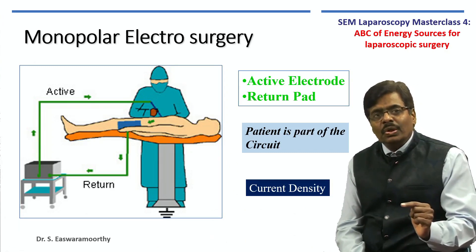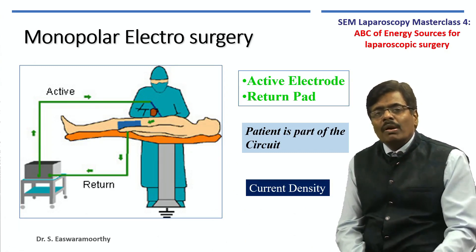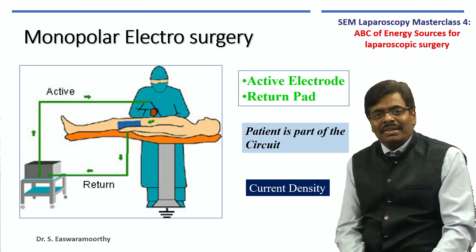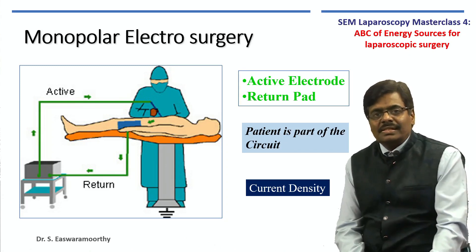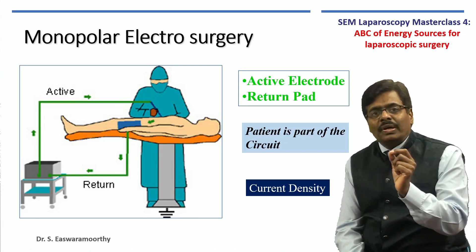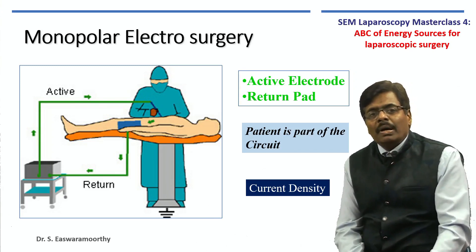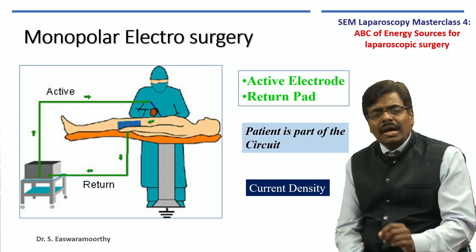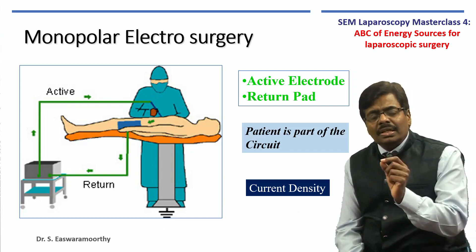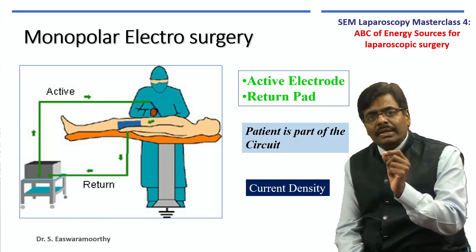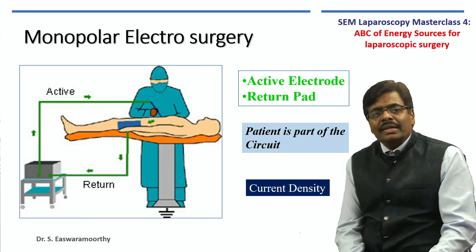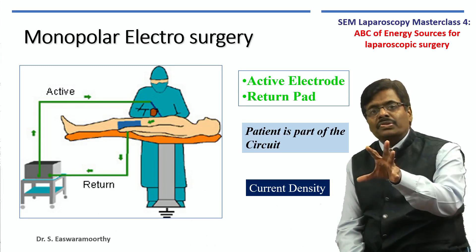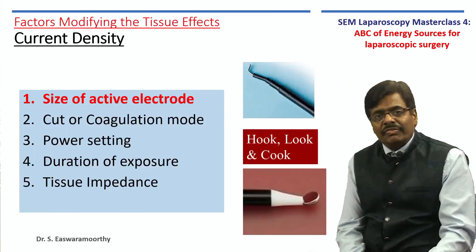The current reaches the return electrode pad, usually placed behind the patient's thigh, and from there returns back to the electrosurgical unit, thereby completing the circuit. The two basic important things about monopolar electrosurgery are: one, the current has to complete a circuit; and two, it always prefers the path of least resistance. The important terminology to understand is current density. The surgeon holds the active electrode where the effect is concentrated, whereas nothing harmful happens at the return electrode because the current is dispersed there. It is the current density that makes the difference.